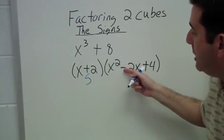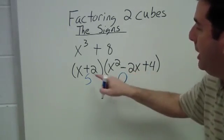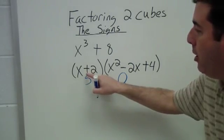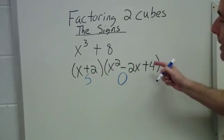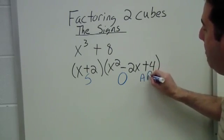Here our sign in the trinomial, in the middle of it, it's the opposite of what we had over here. Back at the back, the sign on the back will always be positive.